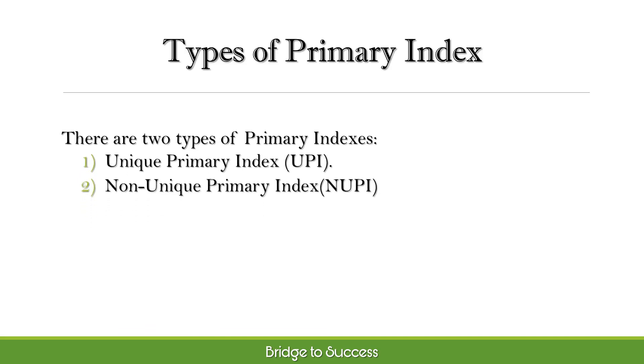There are two types of primary indexes: unique primary index (UPI) and non-unique primary index (NUPI).